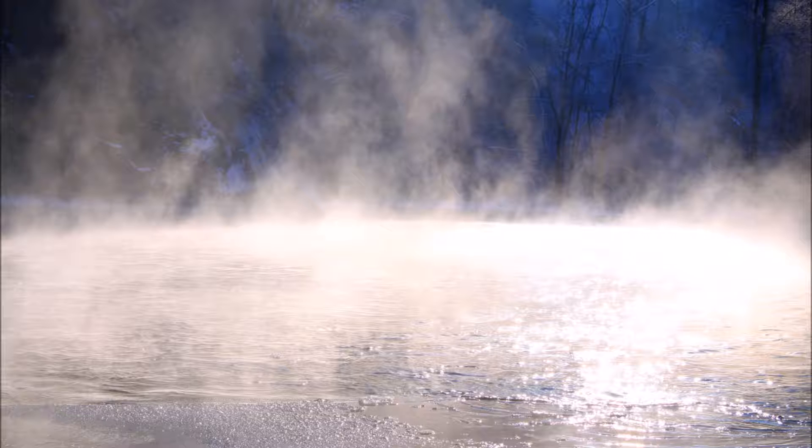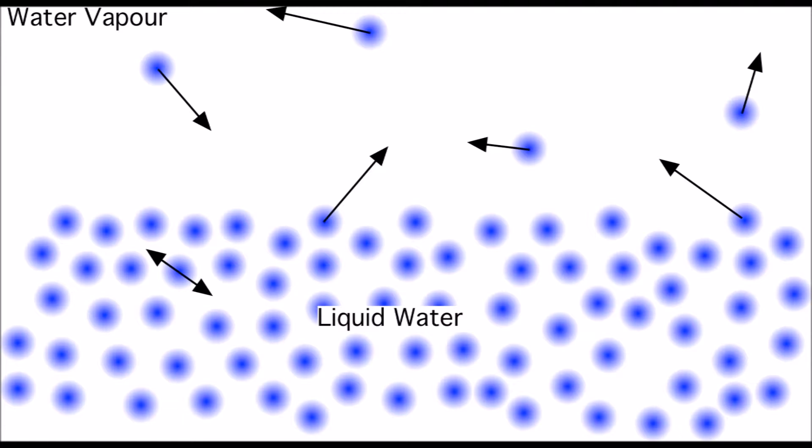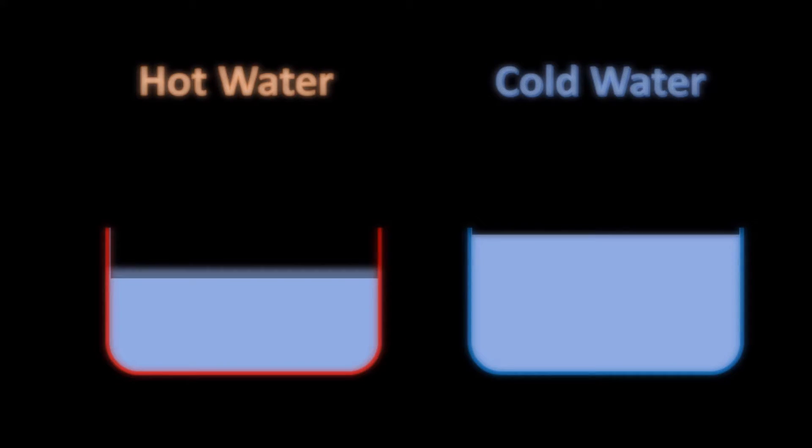So the key here is evaporation. Whenever you make yourself a hot drink like a tea or coffee, you'll notice that hot water has steam rising out of it but cold water doesn't. This is because there's more energy contained within the hot water and allows some of the particles on the surface to break free in a process we call evaporation. Now as more water evaporates, less water is available to form ice.